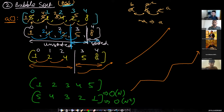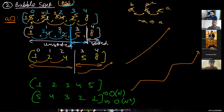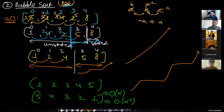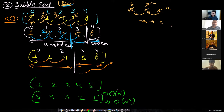This algorithm is input dependent. Any sorting algorithm is either input dependent or input independent. If an algorithm gives different time complexities for different types of input, it is input dependent. If it gives the same time complexity regardless of the input — so best case, average case, and worst case are the same — then it is input independent.